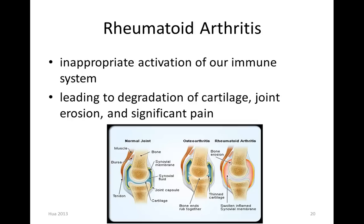As seen in a diagram comparing a normal joint to osteoarthritis and rheumatoid arthritis, the difference is that in rheumatoid arthritis you can have bone erosion, whereas in osteoarthritis you have thinning of the collagen.